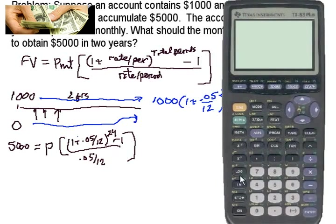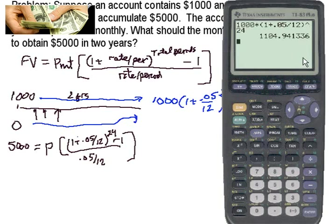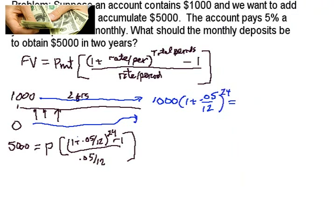All right. So what are we going to calculate out of this? Let's just do 1,000 times, parentheses, 1 plus 0.05 divided by 12. That gets our monthly rate. And we want to do this for 24 months. Calculate out the value. So we see the value is going to be 1104.94. Okay. So we come out with 1104.94.